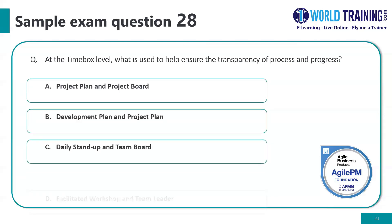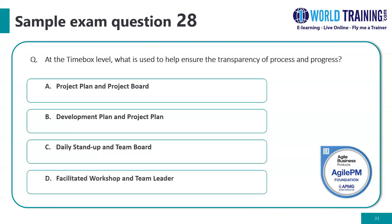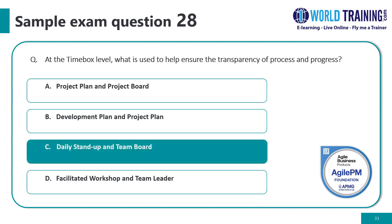Question number twenty-eight: at the time box level, what is used to help ensure the transparency of process and progress? The correct answer is: daily stand-up and team boards.